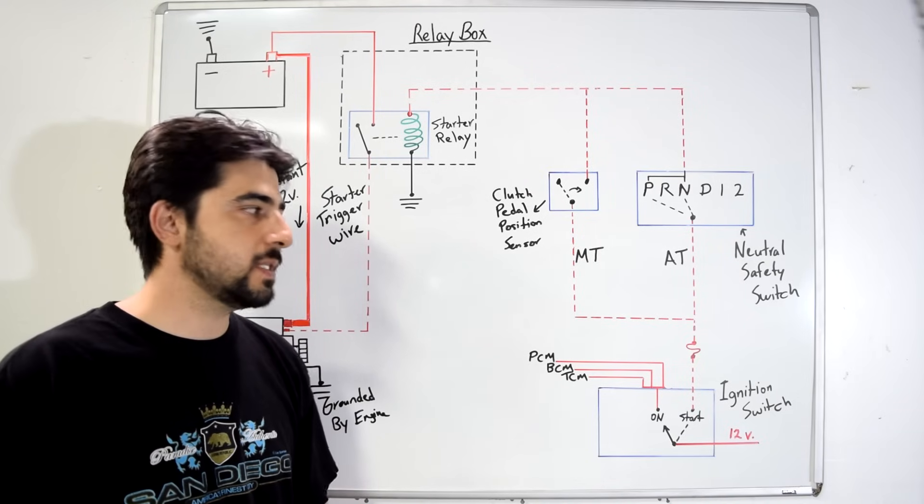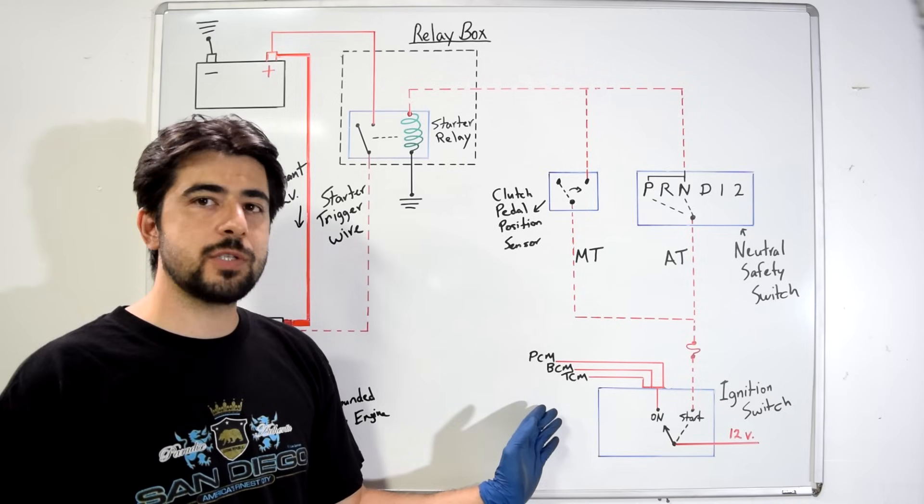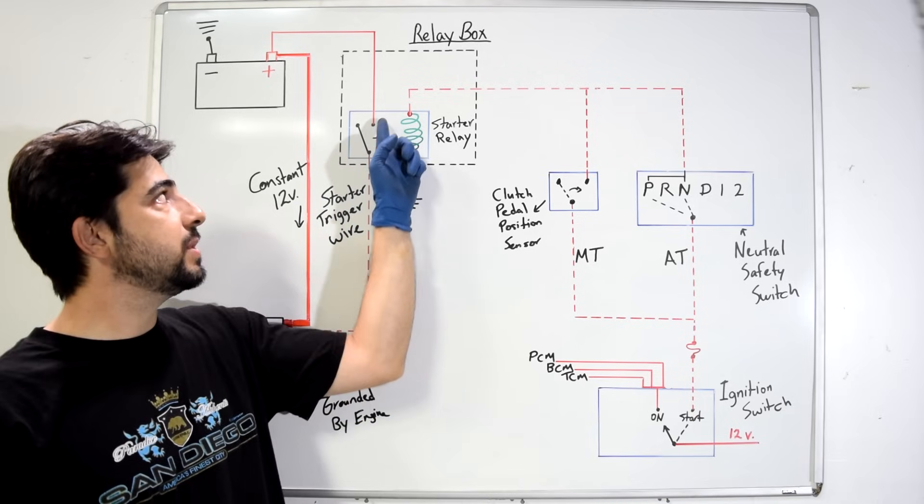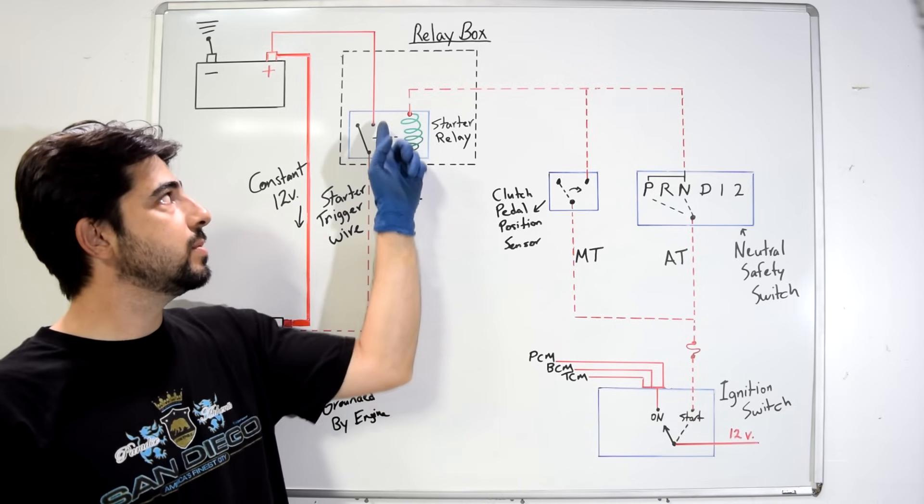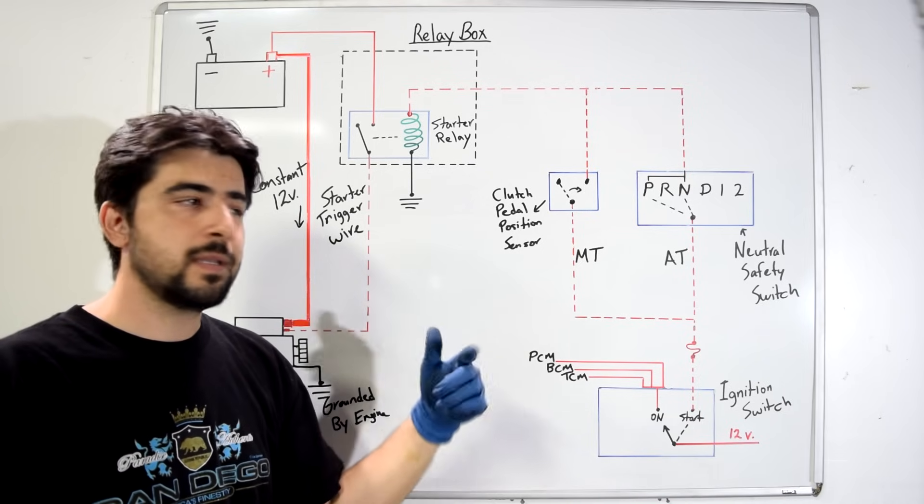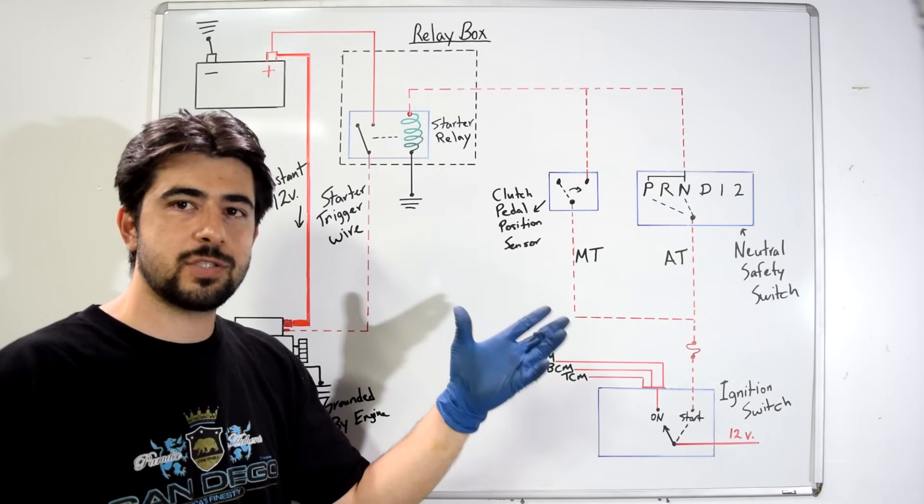So basically what we're doing here is when we turn the key to the on position we get power to all our different control modules, then we bypass this side entirely and we jump these two terminals in our relay, start our starter, and since our control modules are already powered they get a crank signal and they start the car.